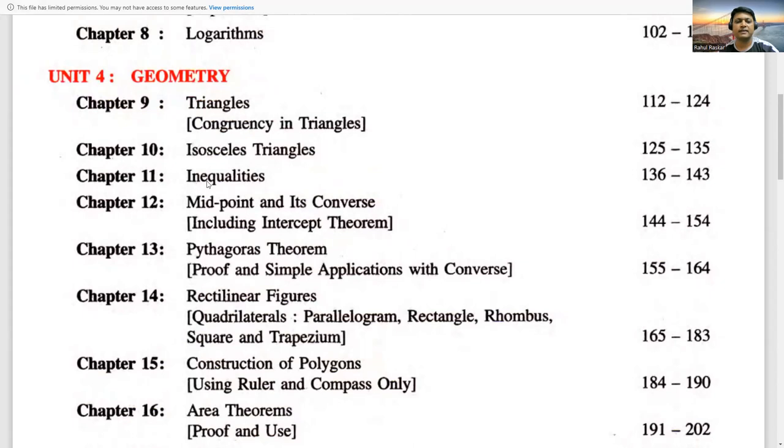Then chapter 11 has inequalities, then 12th is midpoint and its converse which includes intercept theorem. Then chapter 13th has Pythagoras theorem. We know that hypotenuse square is equal to addition of remaining side squares. In that we will see proof and simple application with converse.